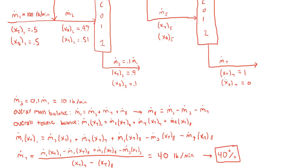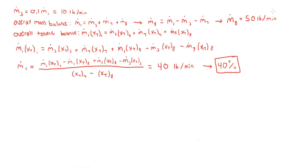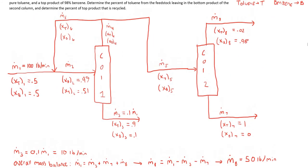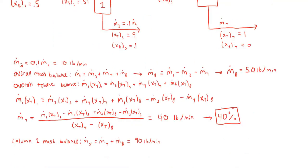Now that we know M.7, we can use our rearranged overall mass balance to calculate M.8. The top product of the second column is 50 pounds per minute. Now that we know the bottom and top product of the second column, we can do a mass balance around the second column to get the mass flow rate of the feed, M.5. The feed to the second column is 90 pounds per minute.